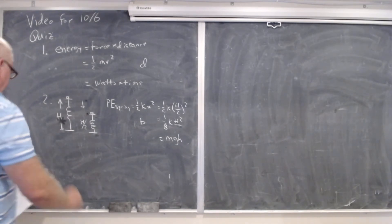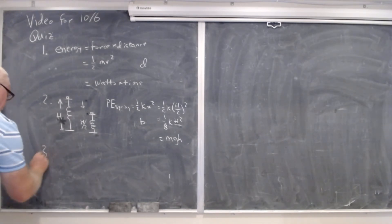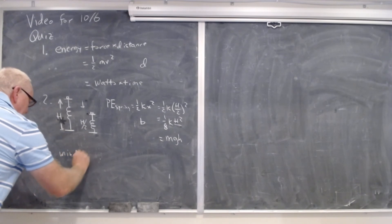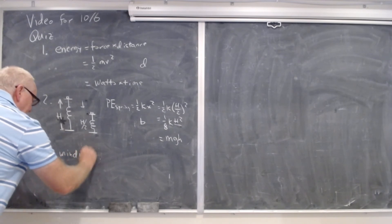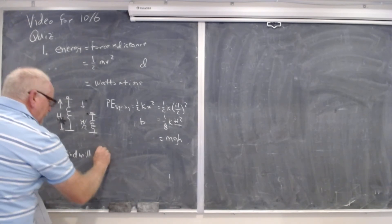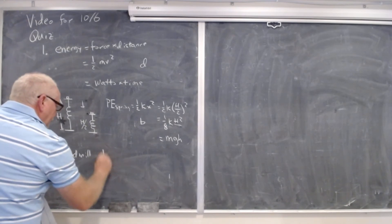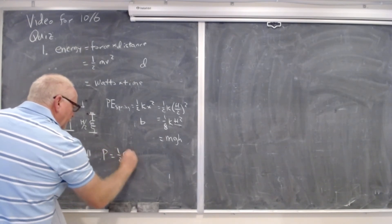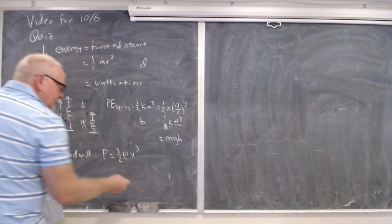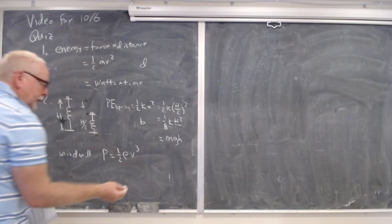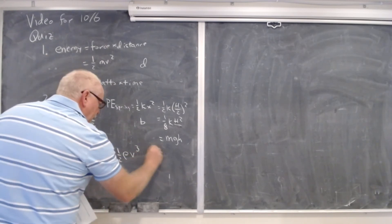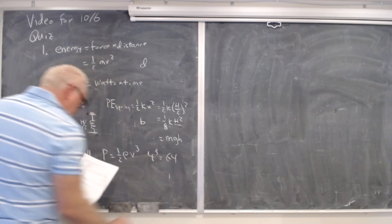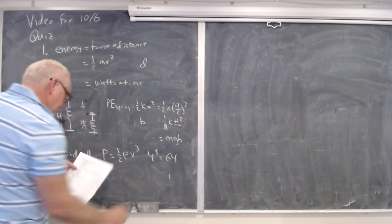Number three — windmill. I was a little disappointed that six people got this wrong, because of course the power in a windmill is one half rho v cubed. So if the wind is four times stronger, four cubed is 64. And of course the answer is C.